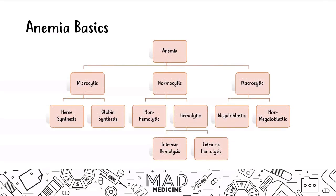When it comes to breaking down anemias, it's very simple. Microcytic anemias are caused by defects in hemoglobin. Hemoglobin is made up of heme and globin, so anything that messes up heme or globin chains is going to cause a microcytic anemia. If you have hemolysis or if you don't have hemolysis, that will differentiate normocytic anemia.